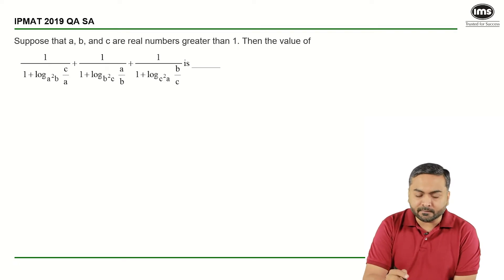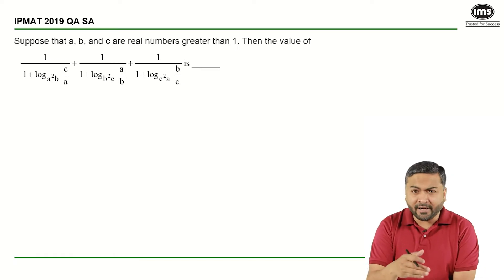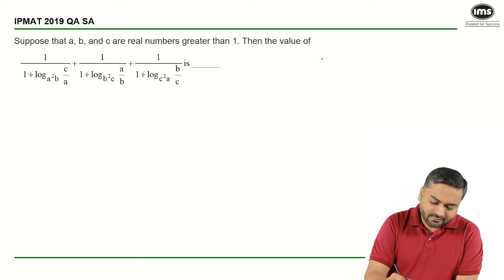The value of the given expression should be determined. The best way to solve this question, that is, no restriction on a, b, c except that it is greater than 1. Let me assume that a is equal to b is equal to c.